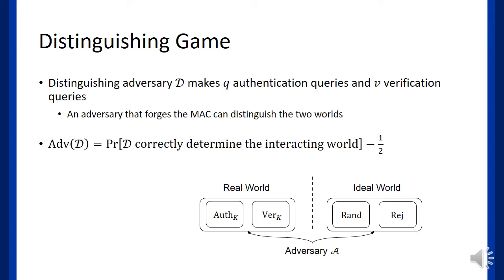To evaluate the upper bound of forging advantage, you can think of the following distinguishing game. The distinguisher is interacting with either the real world or ideal world. The real world comprises the MAC function.